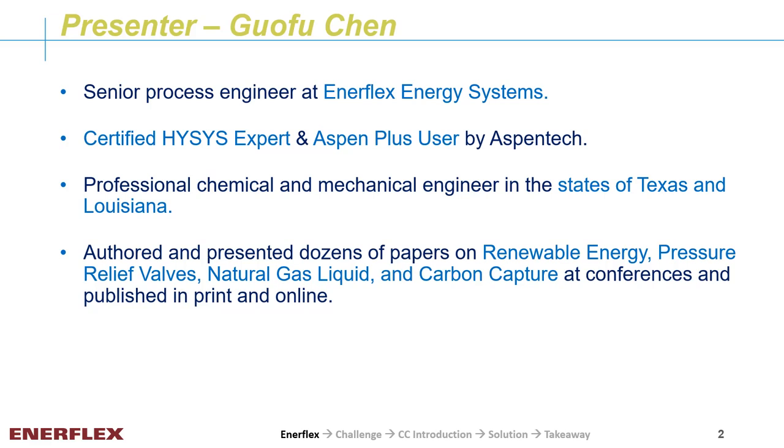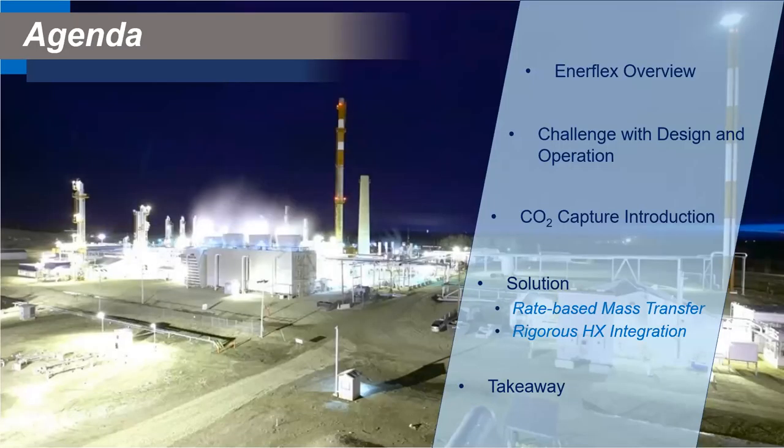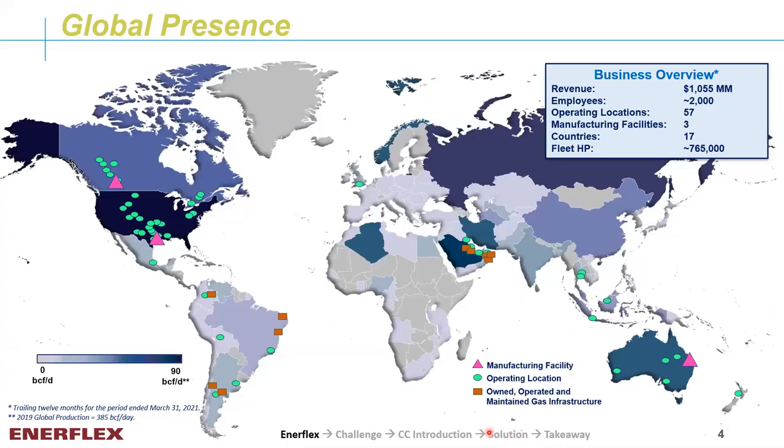I like to attend conferences like this one to speak and learn. Imagine you are riding a train with me — on our ride, we have a total of five stations. The first station is an introduction to Enerflex. After that, I will explain the challenges we are facing with carbon capture plant design and operation. A CO2 capture introduction is also presented for background. Next station is the solution. Finally, the last station is something for you to take away. There is a navigation bar at the bottom of the slide so you can follow along.